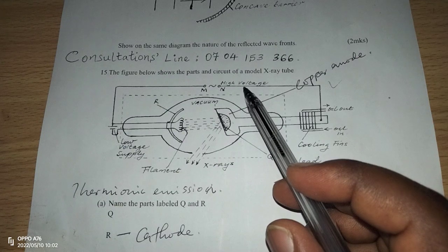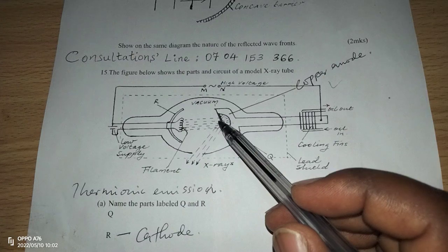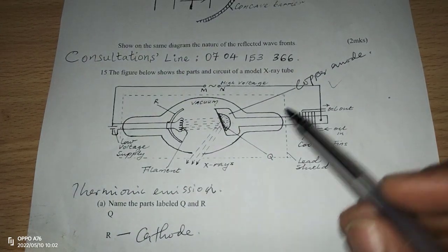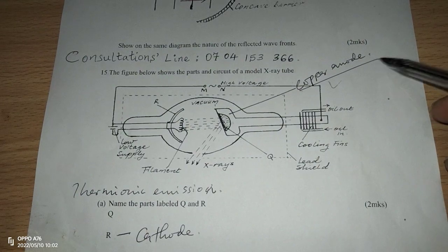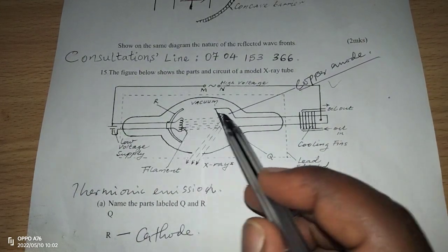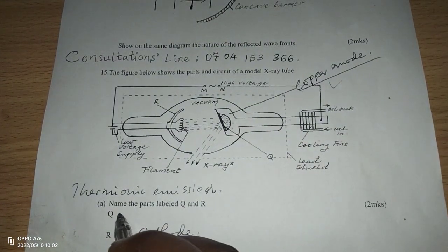Because it is in the positive potential, it is going to attract electrons. The role of the copper anode is to accelerate electrons from the cathode to the anode. What we have here at Q is a target, and the target is made of a material called tungsten.